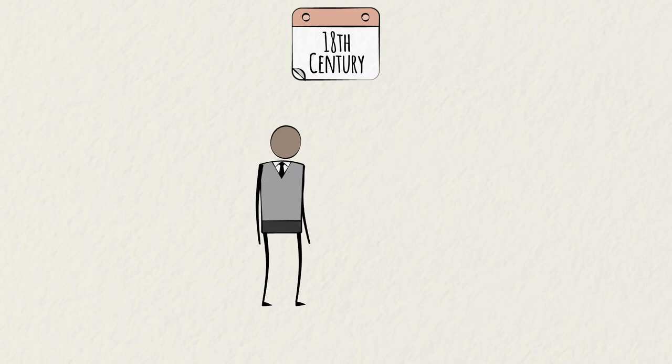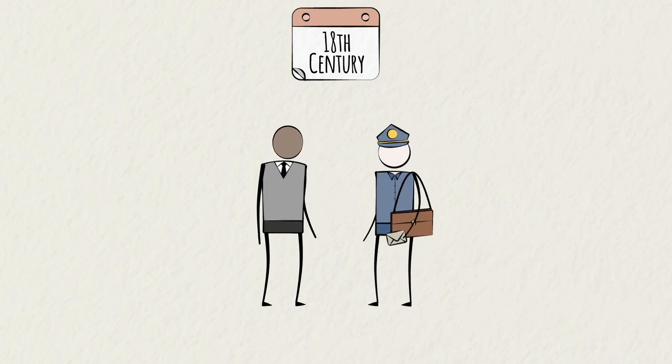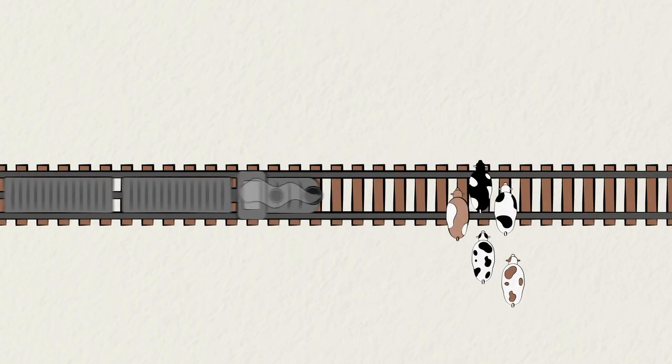Before telecom networks existed, the only option to send information at a distance was the postal system, which was slow and not always reliable.